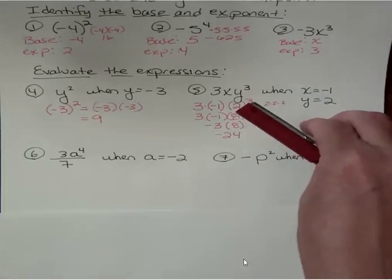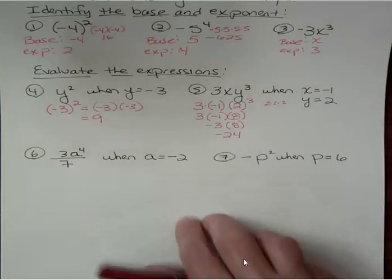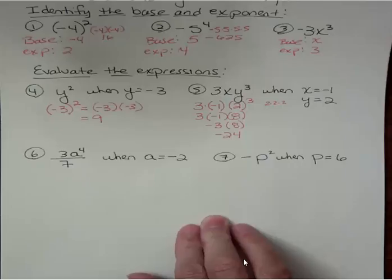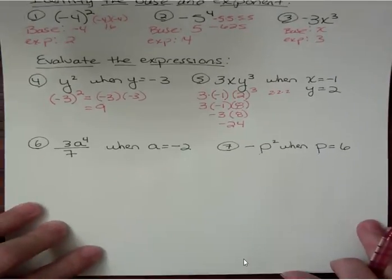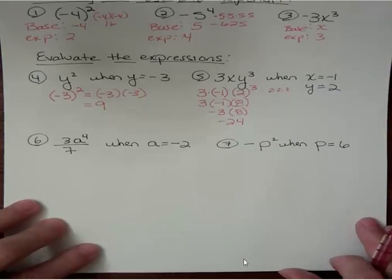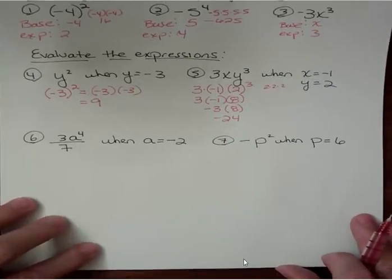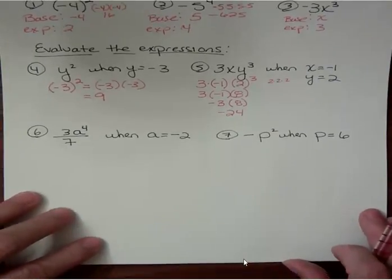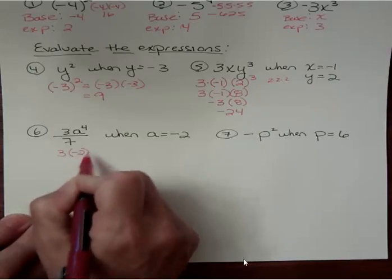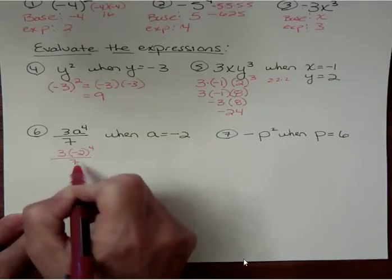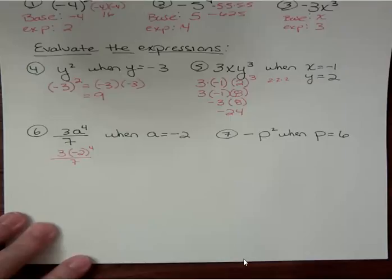Okay, two more. What about number 6? We have 3a to the fourth power over 7, and we know that a is negative 2. Since the whole a, just like on number 4 there, the whole a is negative 2, so when I plug that in, I want to make sure and put parentheses around it. I have 3 times negative 2 to the fourth power over 7, like that.